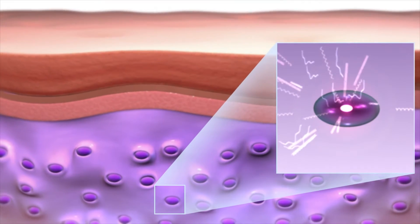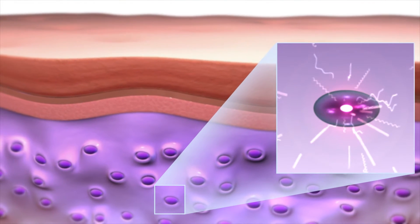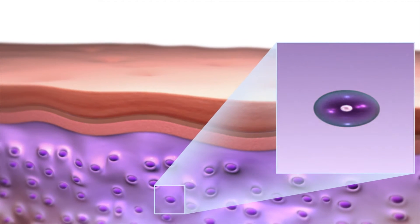In the deepest layers of your skin, special factory cells are hard at work producing collagen and other essential components for supple, youthful looking skin. As we age, factory cells start to slow down.